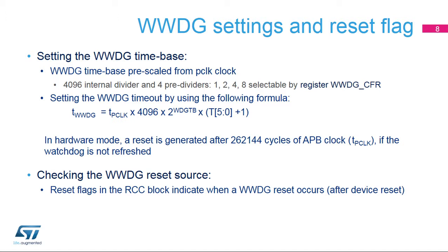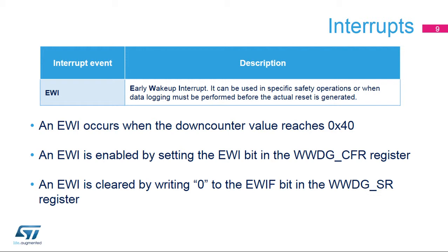When a system reset occurs, it is possible to identify the cause of the reset thanks to status flags provided by the RCC block, and the window watchdog can be one of the sources. The early wake-up interrupt, or EWI, can be used to perform emergency tasks before the reset occurs, such as data logging, data protection, watchdog refresh to prevent the reset, or other emergency tasks. The EWI interrupt occurs whenever the down-counter value reaches 0x40 and is enabled by setting the EWI bit in the WWDG CFR register. The EWI interrupt is cleared by writing 0 to the EWIF bit in the WWDGSR register.